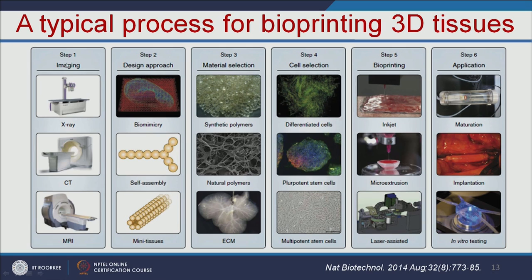This is the typical process for bioprinting 3D tissues. The first step is imaging — if you want to make a particular organ like heart or liver, you do imaging using X-ray, CT scan, and MRI to get a complete idea about the organ. Then based on that, you select the design approach, which can be biomimicry, self-assembly, or mini tissues. Once the design approach is selected, you choose the suitable material — synthetic or natural polymers that mimic your extracellular matrix. The fourth step is selection of cells, which can be differentiated cells or stem cells. You can add the cells on the scaffold to make the particular organ. Then you bio-print the organ using inkjet printing, micro-extrusion, or laser-assisted printing.